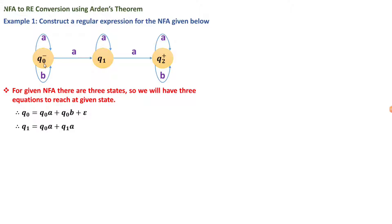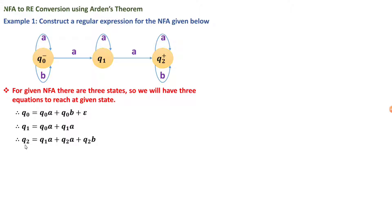For state q1: reading 'a' from q0 takes us to q1, and from q1 reading 'a' takes us back to q1. So the equation for q1 is: q1 = q0·a + q1·a, meaning we reach q1 from q0 on 'a' or from q1 on 'a'.